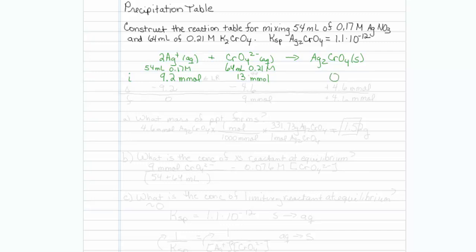Now, I can tell that if I were going to use 13 millimoles of chromate, I'd need 26 millimoles of silver, whereas if I were going to use 9.2 millimoles of silver, I only need use 4.6 millimoles of chromate, so this has to be my limiting reagent. So on the delta row, I will subtract all of my silver minus half the amount of chromate, and plus 4.6 millimoles of precipitate.